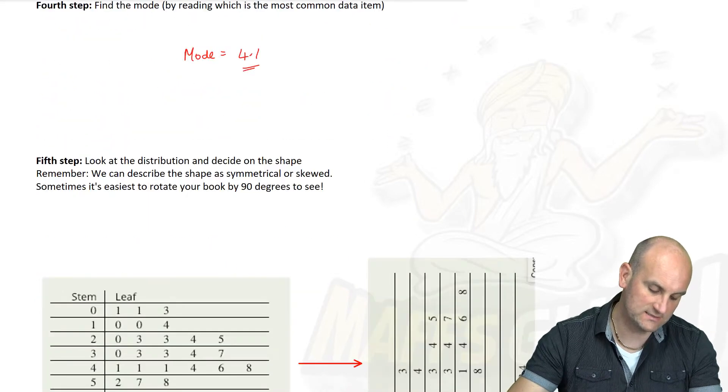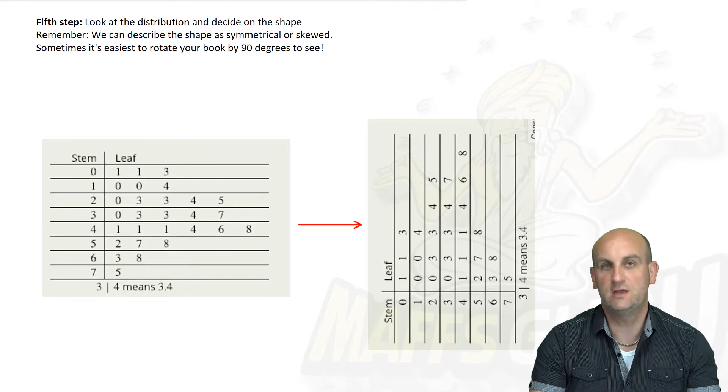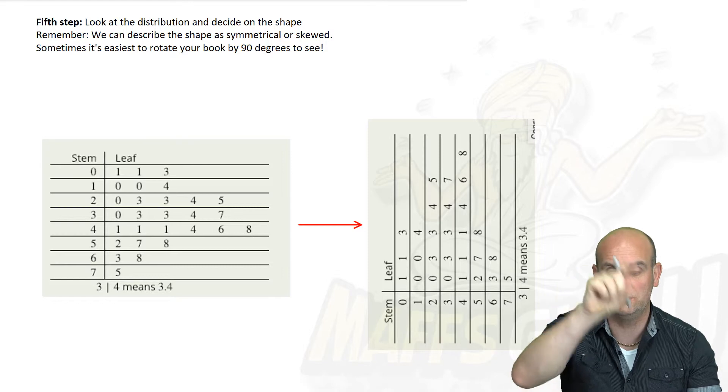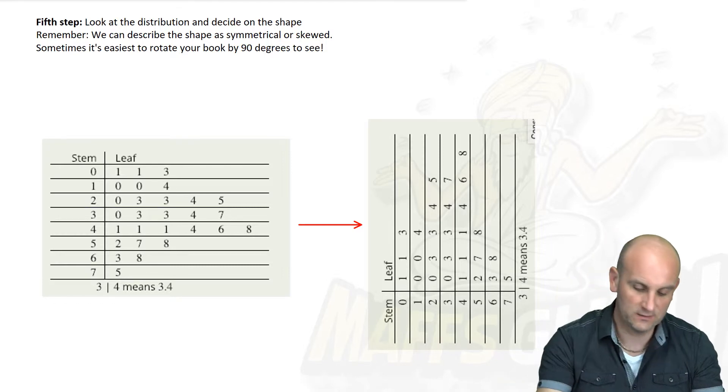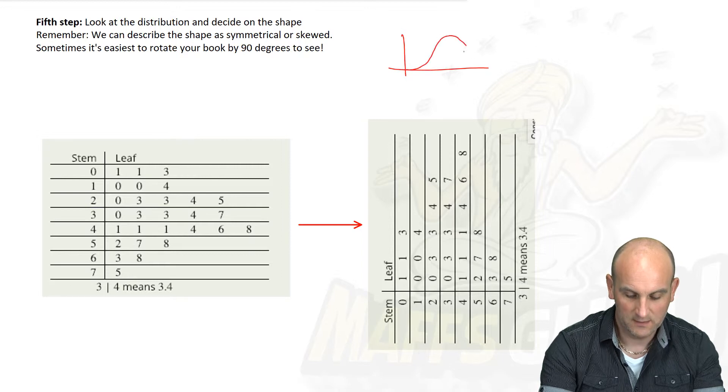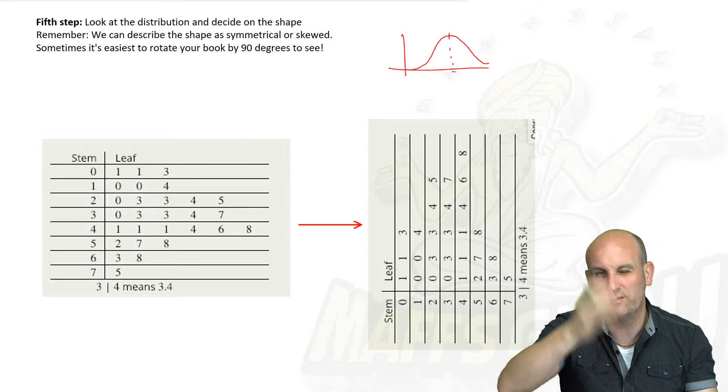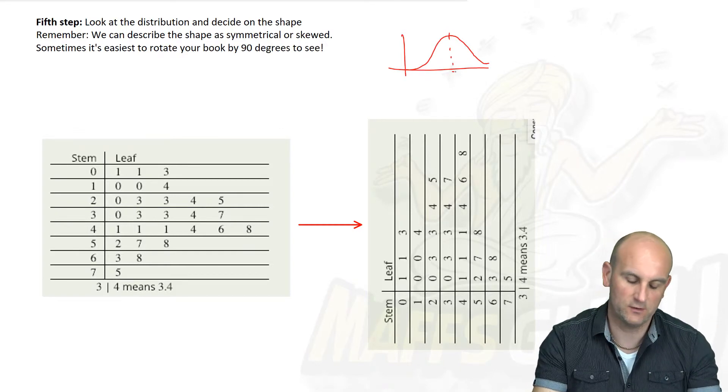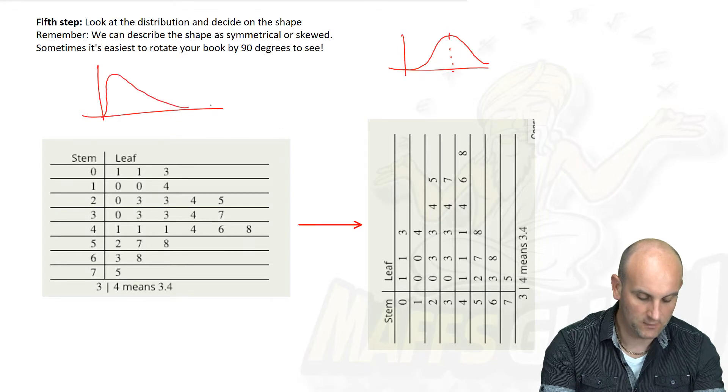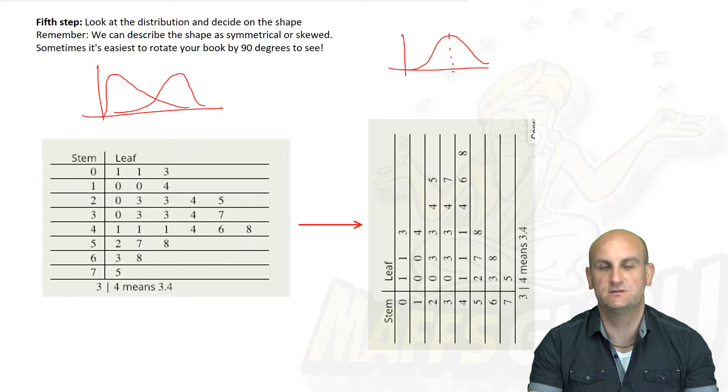Now finally, the question says, look at this distribution and decide on the shape. Do you remember back to a video in year 8 work that talked about whether it was skewed or symmetrical? If it's symmetrical, it's roughly speaking even on either side. You can draw a line through the middle. If it's skewed, it's very definitely more one way or very definitely the other way.